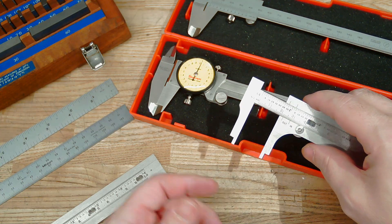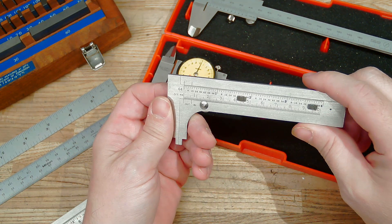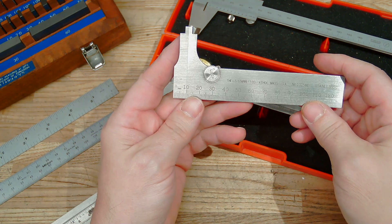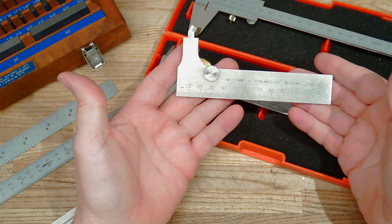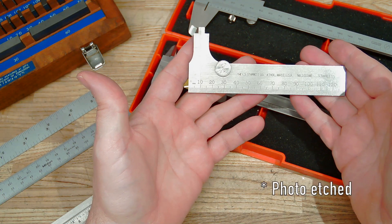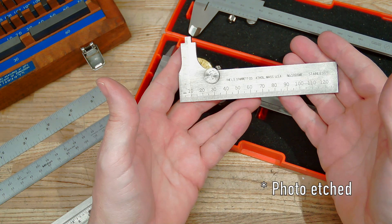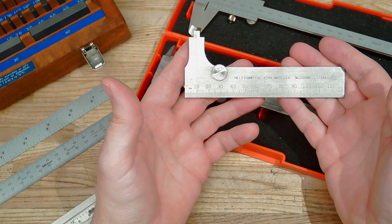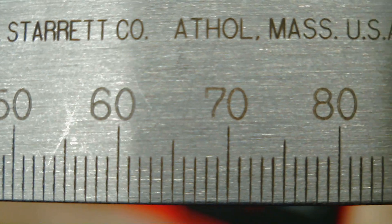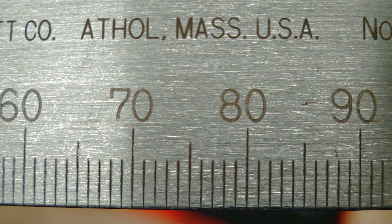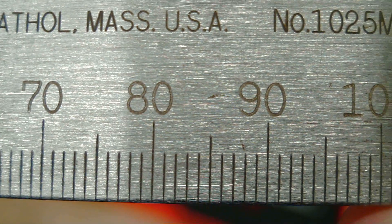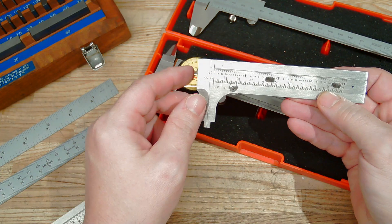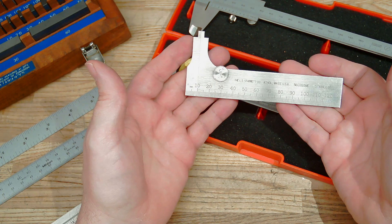Starrett makes a big deal about all of their measuring equipment being machine divided as opposed to laser etched, and I kind of wonder what the function of that is, what's the benefit of that. Well one thing is it is kind of neat if you take a real close-up view of the text and the engravings on here, you can actually see the machining mark. So that's kind of neat, I guess.